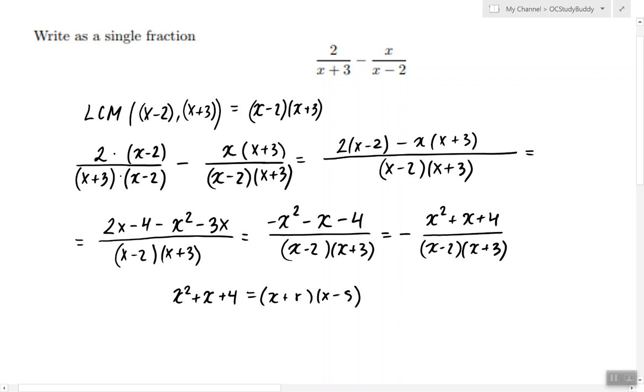If we try to find two numbers r and s whose product is 4 and whose sum is equal to 1, we won't be able to find any because there are only two pairs of numbers that multiply to 4 and their sum is 5 and 4 respectively.